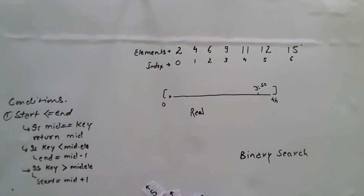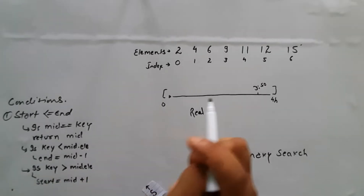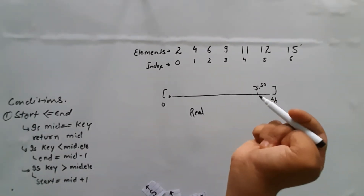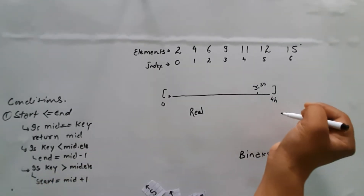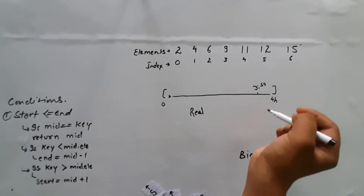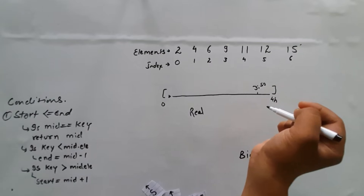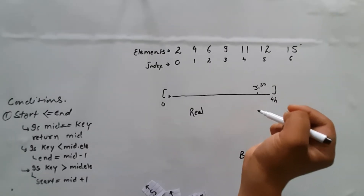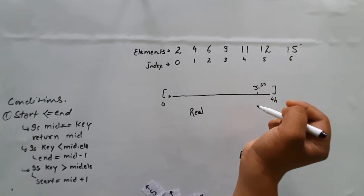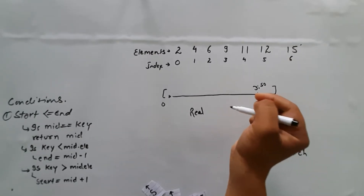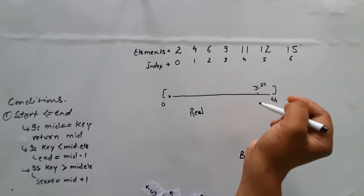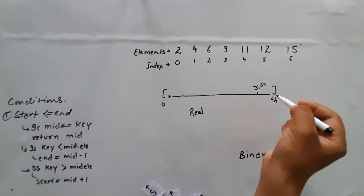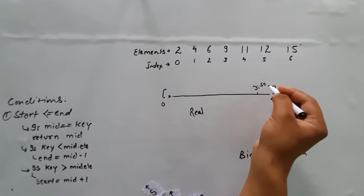This is binary search and I'm going to explain it. Before going to the array part of it, let's go with a real life example. Let's say you have a four hour long CCTV clip recording a bike in a parking lot, and in that four hour clip, the bike is going to get stolen. Let's say the bike is going to get stolen at the timestamp of three hours and 50 minutes.